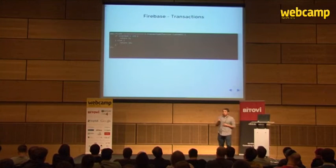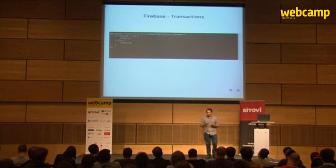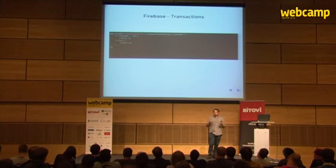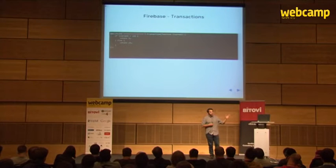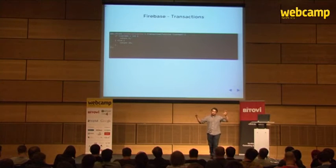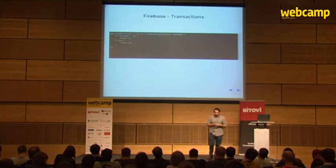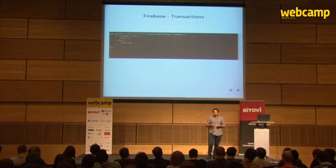Firebase supports transactions, and they are basically a glorified set method. They're glorified because you can put custom JavaScript logic in the transaction function, and you can use other pieces of the database to update some other subnode in the JSON that you have. Also, if the database changes while you're in a transaction, the transaction will fail and it will roll back.